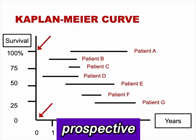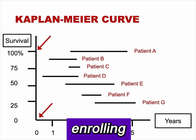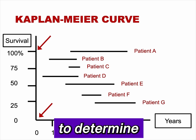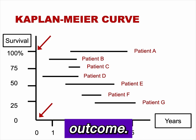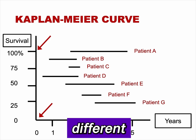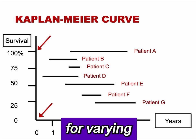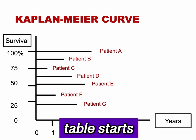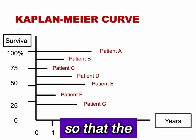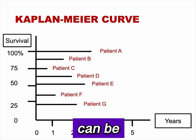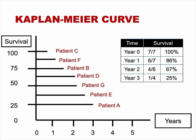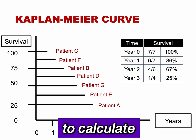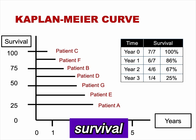In a prospective cohort design, we start by enrolling patients and then follow them over time to determine their disease outcome. Notice that the patients were enrolled at different times and followed for varying lengths of time. Our data table starts by lining up the patients so that survival time can be compared. Once we order the patients by length of survival, we can begin to calculate survival rates.